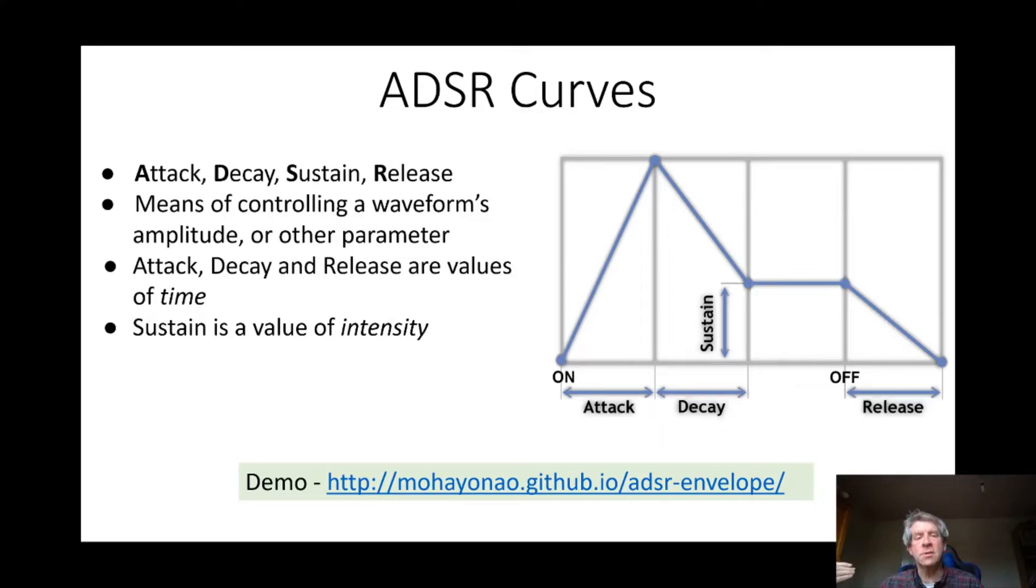By specifying an ADSR curve, one can control a waveform's amplitude and shape how that waveform changes over time. In this curve, time is represented on the x-axis and amplitude or intensity values on the y-axis. When specifying an ADSR curve, one typically specifies attack, decay, and release as time values, whereas one often specifies the sustained level as an amplitude level.